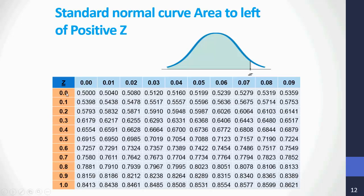What is the area to the left of 0.0? We read 0.0 vertically and 0.0 horizontally, and at the intersection we find the area to the left of 0 is 0.5, which we already know. Now, suppose we are asked to find the area to the left of 0.15. Vertically we pick up 0.1, and horizontally we pick up 0.05 — so 0.1 plus 0.05 is 0.15. At the intersection, the area to the left of 0.15 is 0.5596.